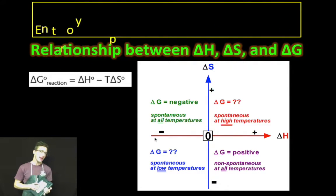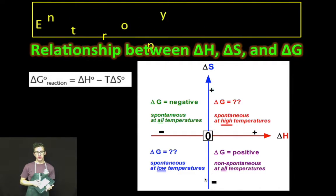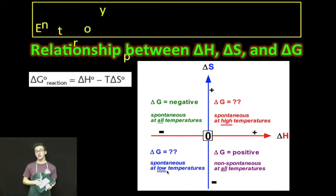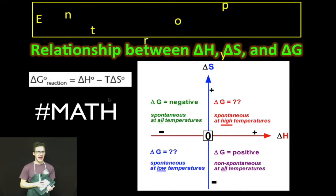On the other hand, if delta H is negative, which is thermodynamically favorable, but delta S is negative, which is thermodynamically unfavorable, the reaction will be spontaneous, or delta G is going to be negative, only at low temperatures. Come back to the equation. Think about it. Math.